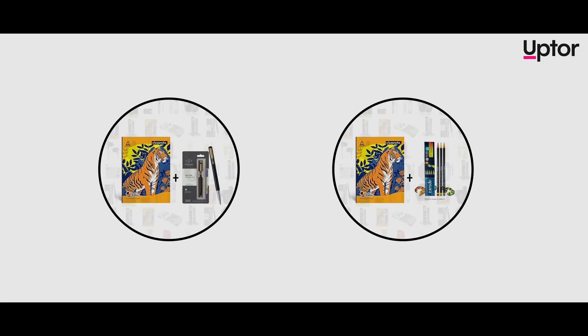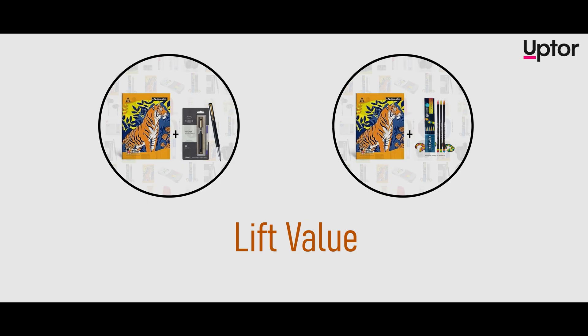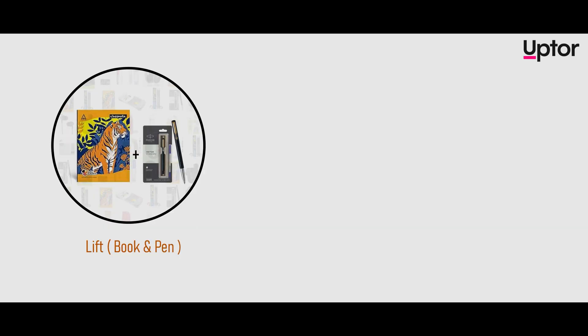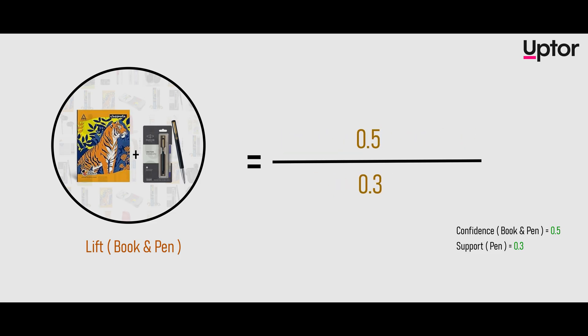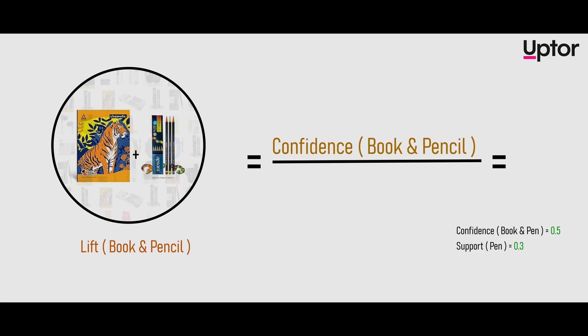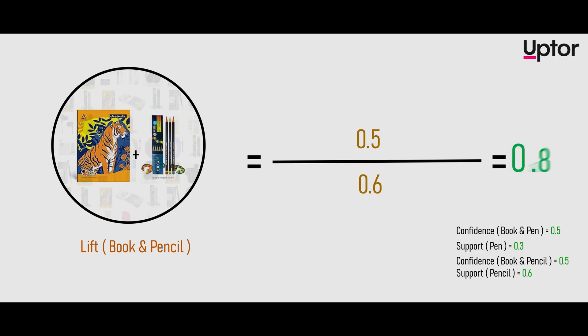The confidence value of book and pencil is 0.5. Now we can use the lift value to decide what combo is best. Lift of book-pen equals confidence value of book-pen divided by support of pen — that's 0.5 divided by 0.3, giving us 1.67. The lift value of book-pencil equals confidence of book-pencil divided by support of pencil — 0.5 divided by 0.6 equals 0.83. Since book-pen combo has a lift above 1, that's the better combo to recommend.